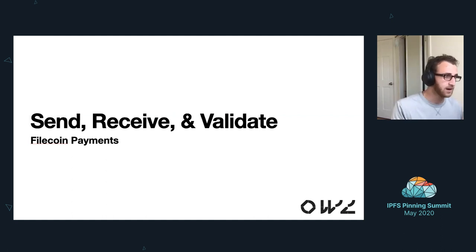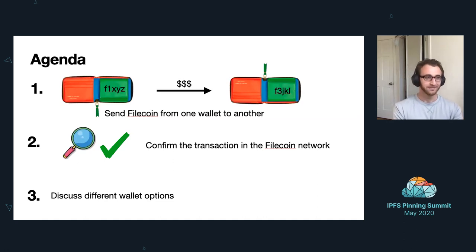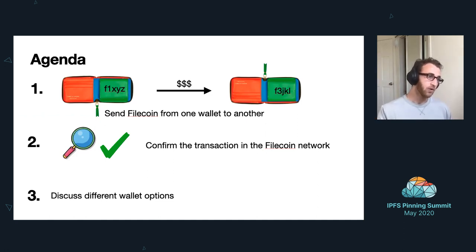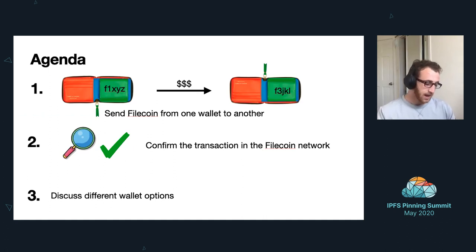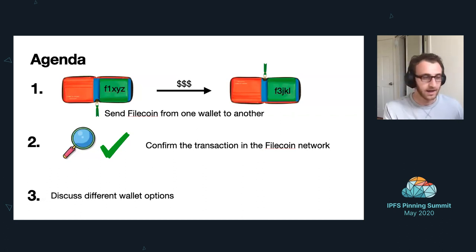So just to talk about the agenda: first, we're going to send Filecoin from one wallet to another and construct a transaction and go through that whole flow. We'll then find that transaction in the network and make sure it's confirmed. We'll wrap up talking about different wallet options. A stretch goal would be to actually look at some of the Lotus code so that if you decide you want to build a wallet or an app, you don't need to rely on documentation being super up to date at all times.